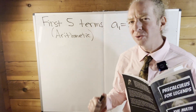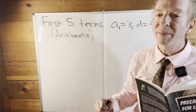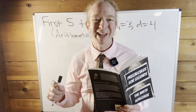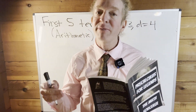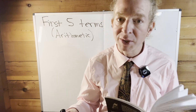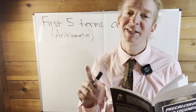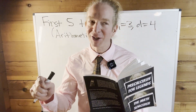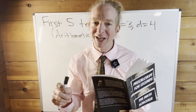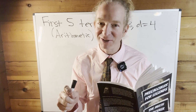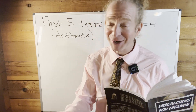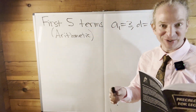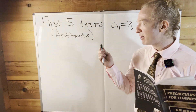In this video we're going to do a simple example involving what is called an arithmetic sequence. It's not 'arithmetic' — it's actually 'arithmetic.' The reason is because it's being used as an adjective — random fact. Anyways, arithmetic sequence.